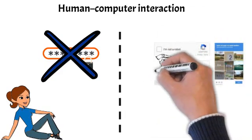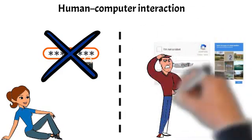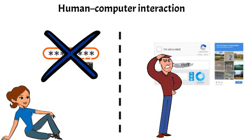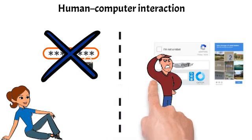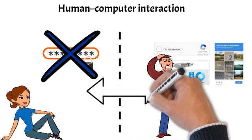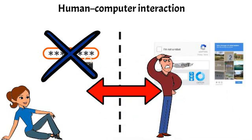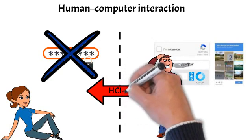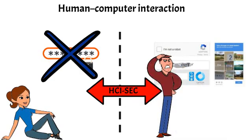The link between user experience and security has been closely studied academically, and is known as HCISEC, or Human-Computer Interaction and Security. Security professionals should be fully aware that while they need to give utmost precedence to system security, they cannot overlook user experience. They must ensure that only authorized users have access to the system, and also make sure that users are safe in the knowledge that their information is safe online.